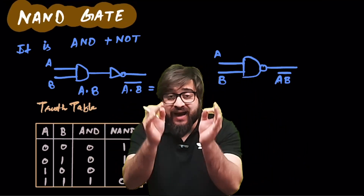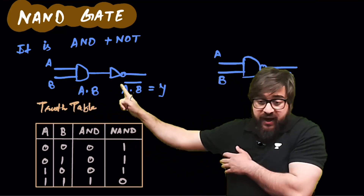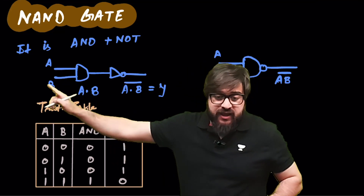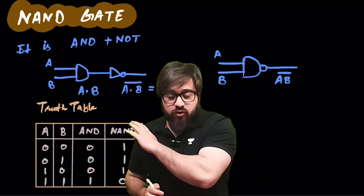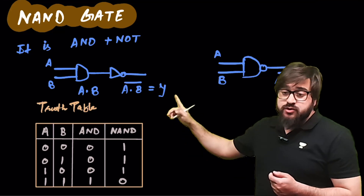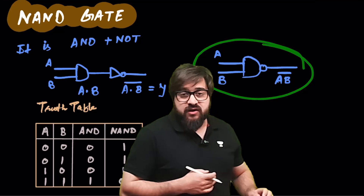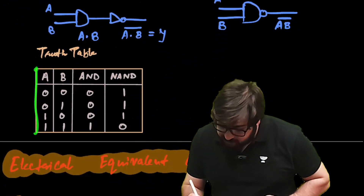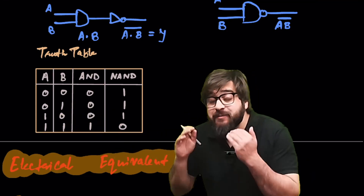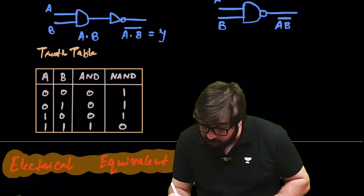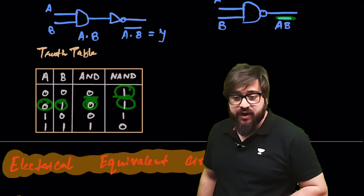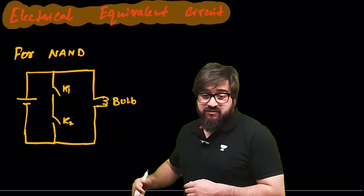The NAND gate is AND plus NOT. Inputs A and B go into the AND gate giving A·B, then the NOT gate applies the bar, giving Y = (AB)̄. Truth table: 0·0=0, 0-bar=1; 0·1=0, 0-bar=1; 1·0=0, 0-bar=1; 1·1=1, 1-bar=0. So the NAND output is 0 only when both inputs are 1.